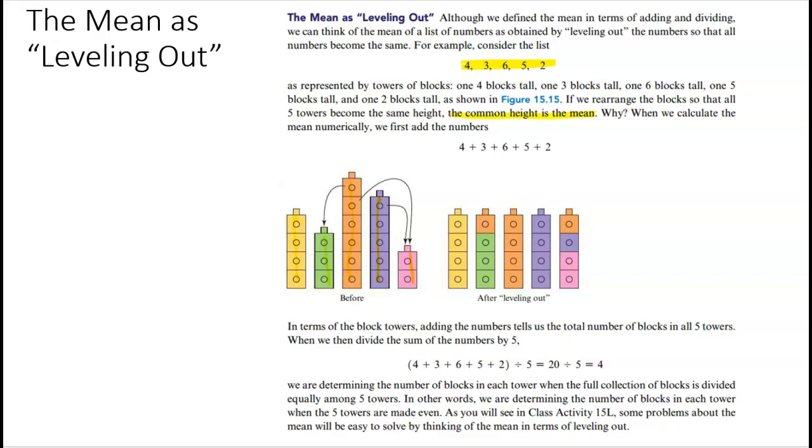Why? When we calculate the mean numerically, we first add the numbers all up. So we kind of put all of the blocks in one giant cube. In terms of the blocks, adding tells the total number of blocks in all five towers. Then when we divide it by five, we're seeing how many blocks go in each of those five towers. So here when we level, we can think of: this 3 needed to get a little higher, so they got one of the orange. And then this pink got two of the orange—I'm sorry, one orange and one purple. In other words, you were determining the number of blocks in each tower.